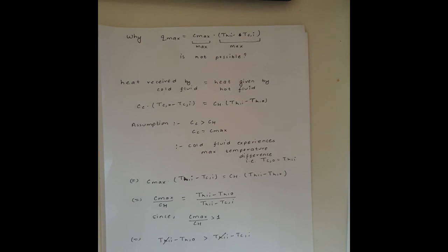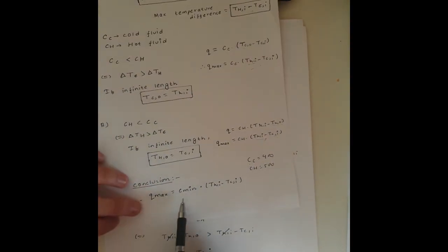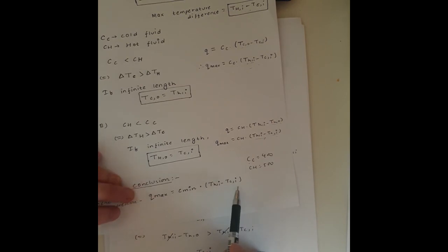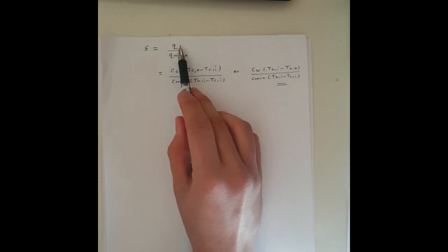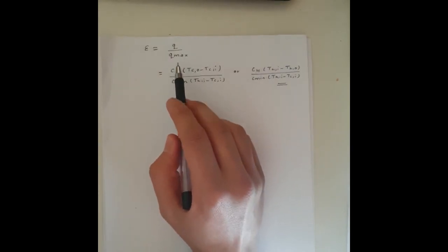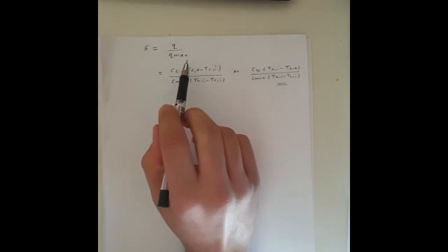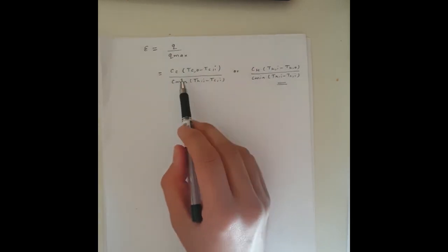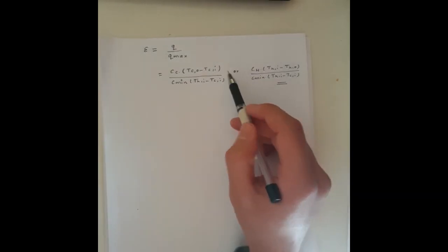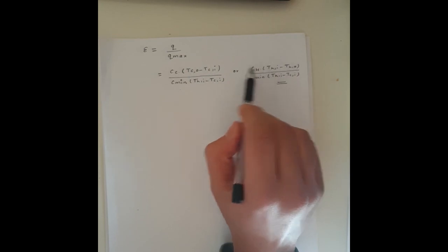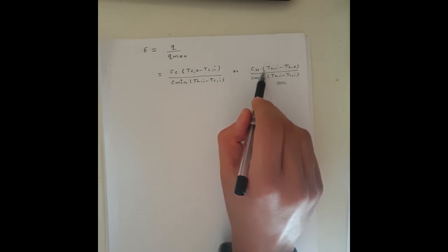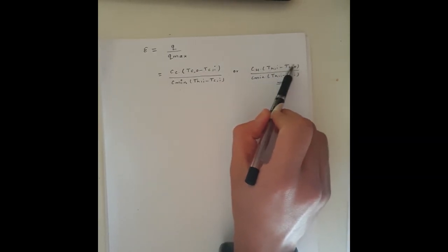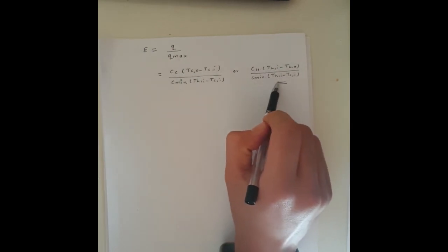Therefore, Q_max is always equal to C_min times the maximum temperature difference. The efficiency epsilon is then Q/Q_max. For the cold fluid: epsilon = (CC × (TCO − TCI)) / (C_min × (THI − TCI)). The same expression can be written for the hot fluid: epsilon = (CH × (THI − THO)) / (C_min × (THI − TCI)).